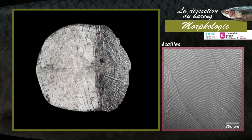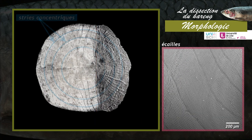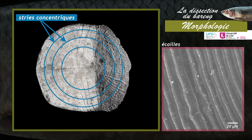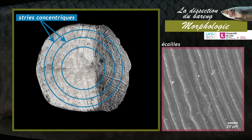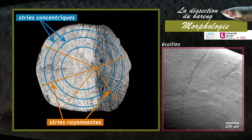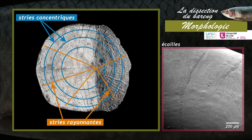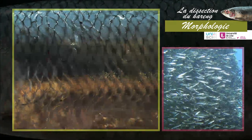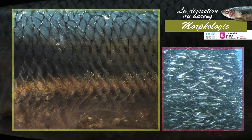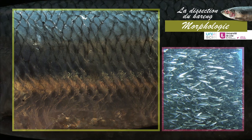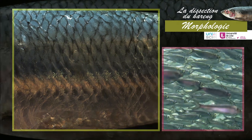Les écailles sont parcourues par des stries concentriques de différentes tailles ainsi que par des stries rayonnantes. Sur chaque écaille sont présents des pigments et des cristaux qui donnent la coloration et les reflets métalliques à l'animal.